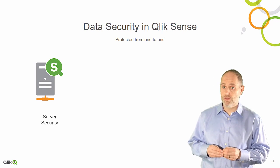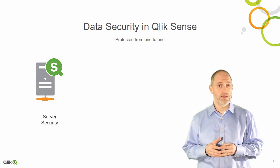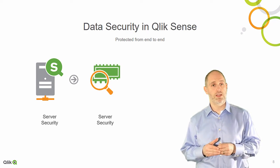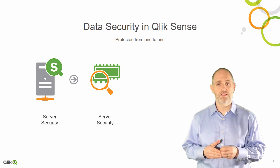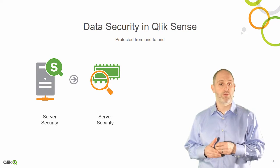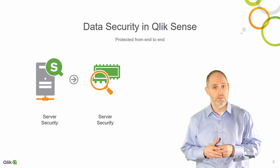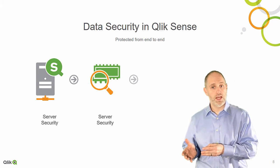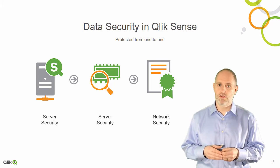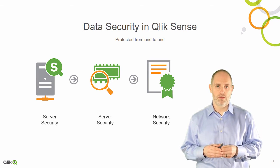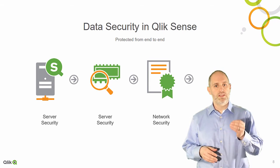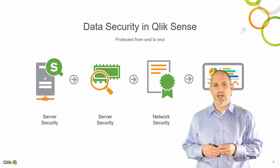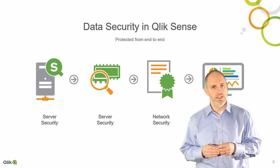When the contents of a QVF file are loaded into memory, the operating system security system protects the memory, allowing only authorized Qlik Sense services to read and write from the memory Qlik Sense uses. As data travels from the Qlik Sense server to the client browser, it's encrypted using the digital certificate applied to the Qlik Sense server. When data arrives at the client, the browser decrypts the information and metadata renders it in the browser window.